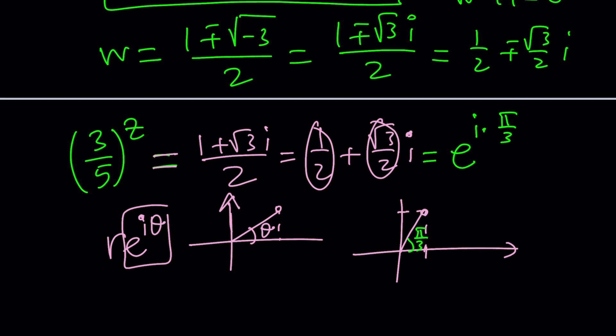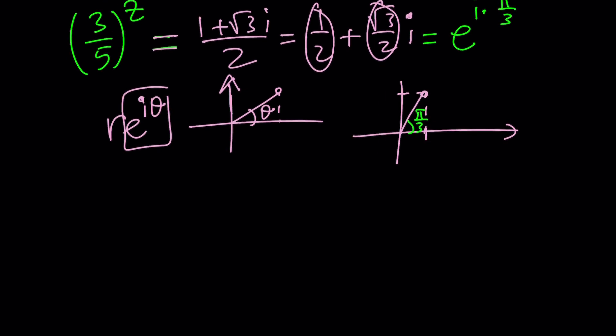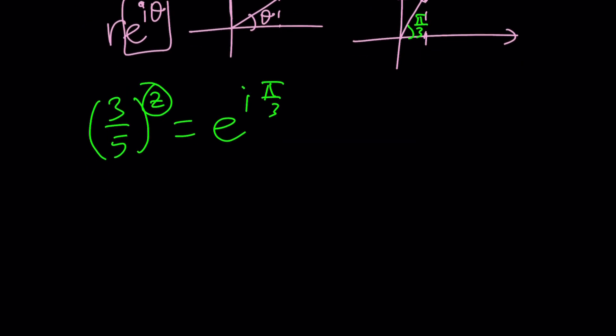So you can put it all together. But this is what I'm trying to get at. 3 over 5 to the Z equals this. Now I can go ahead and use natural log. But you can also write this in a fancier form, e to the power Z ln 3 over 5, or just natural log both sides. It would work the same way.